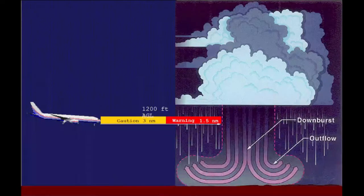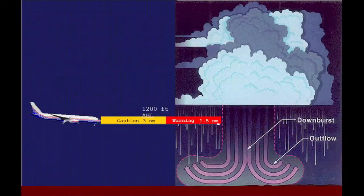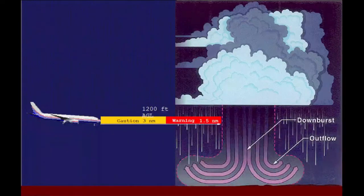Predictive wind shear uses wind velocity data gathered by the Doppler weather radar system to identify wind shear conditions ahead of the aircraft. The Doppler weather radar begins scanning automatically when the aircraft descends below 2,300 feet AGL. Alerts are shown on the navigation display when the aircraft is below 1,200 feet AGL.